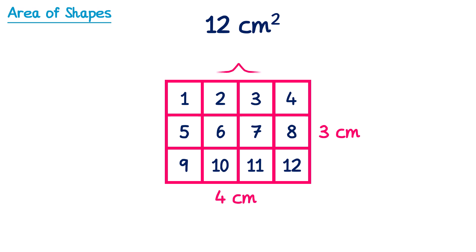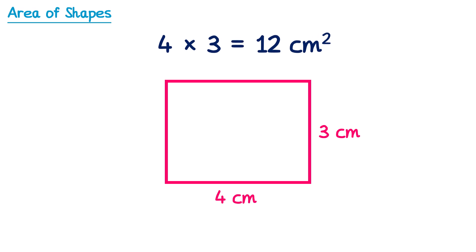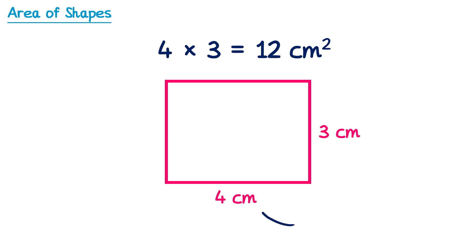This is not surprising since we can see there are 4 squares across the top, since the width of the shape is 4cm. There are 3 squares going up the side because the height of the shape is 3cm. So we could have arrived at this area very quickly by simply multiplying the 4 and the 3. 4 times 3 gives you 12, 12cm squared. So to find the area of a rectangle, you just multiply the base, which in this case was 4, by the height, which in this case was 3.